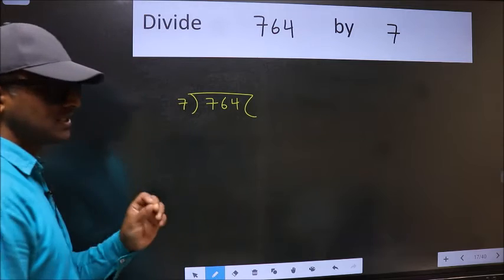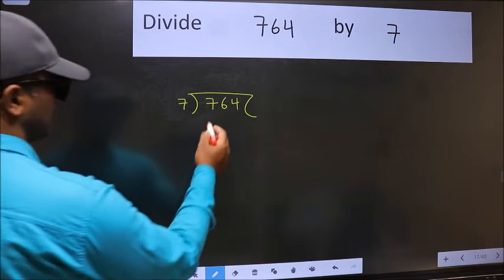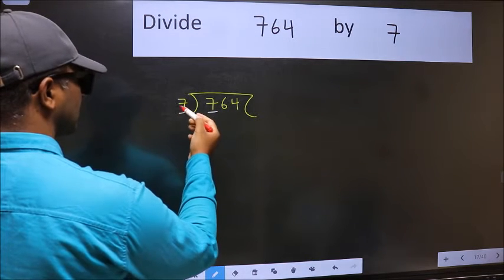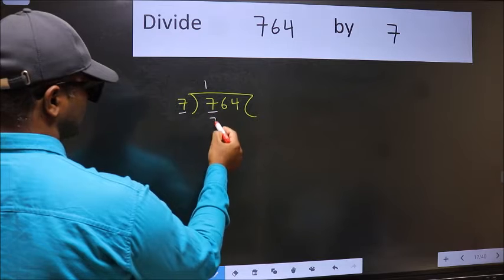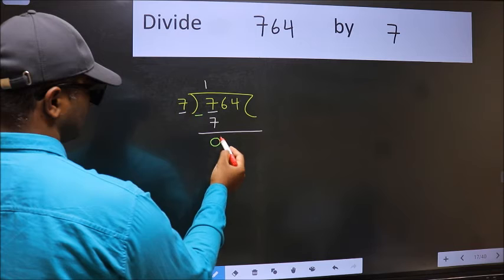This is step 1. Next, here we have 7 and here 7. When do we get 7 in the 7 table? 7 once is 7. Now we should subtract. We get 0.